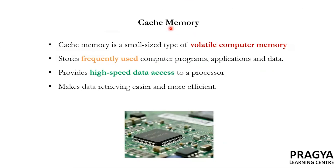Let's move on to the next type of primary memory, that is cache memory. Cache memory is also a volatile computer memory. When we use some websites or applications, some data from them will be stored in our system, so that next time when we use the same website or application, the data will be retrieved faster. These information are stored in a small memory called cache memory. Cache memory provides high-speed data access to a processor and makes data retrieving easier and more efficient.